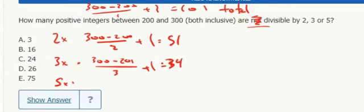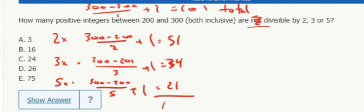The multiples of 5: 300 is the greatest, 200 is the least, over 5 plus 1. That gives me 21. So I add up all those, that's 106.